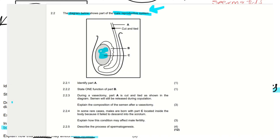Question 2.2.1 says we should identify part A. Part A is this tube-like structure that I am painting with blue — this tube that descends here. We call it the vas deferens, or it is called the sperm duct. So part A is known as the sperm duct or the vas deferens.